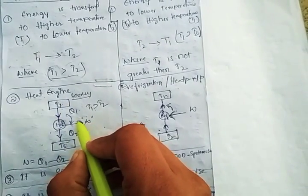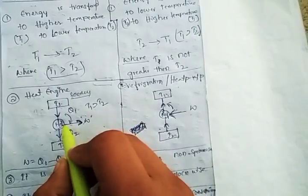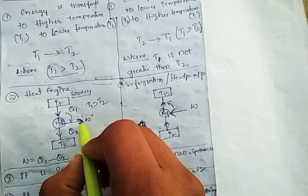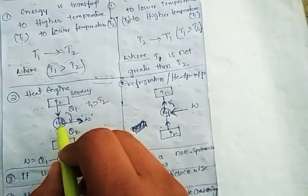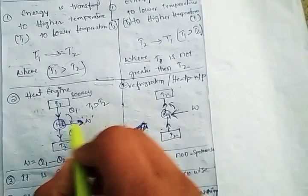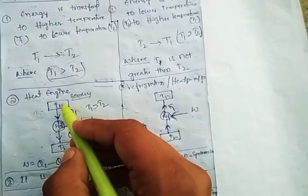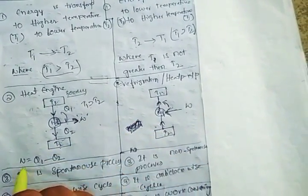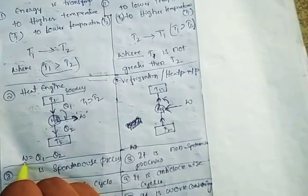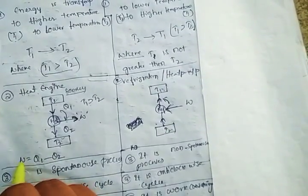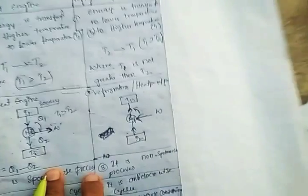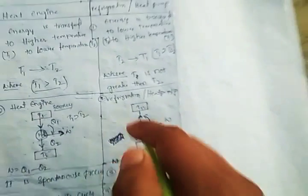The arrow pointing outwards represents that work has been taken out by this engine. We have not done any work on this engine — we have got work from the heat engine because energy is transferred from higher to lower temperature. Numerically, the work done is W = Q1 minus Q2.